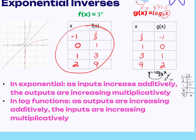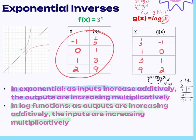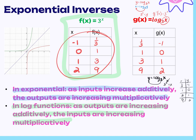As the inputs of an exponential function increase additively, the outputs increase multiplicatively. For a log function, as the outputs increase additively, the inputs increase multiplicatively. This is true for all of them, not just this one. You might be given a chart without an equation and have to compare which values go up additively and which multiplicatively — that determines whether it's exponential or log.